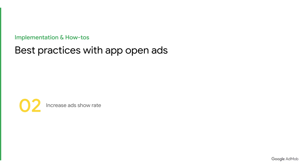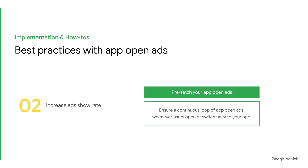Next, how can you increase your ads show rate on your app? We recommend prefetching AppOpenAds for future ad placements. This helps to increase the number of ads displayed within your app by ensuring a continuous loop of AppOpenAds whenever users open or switch back to your app.